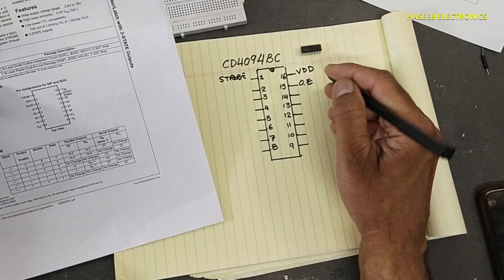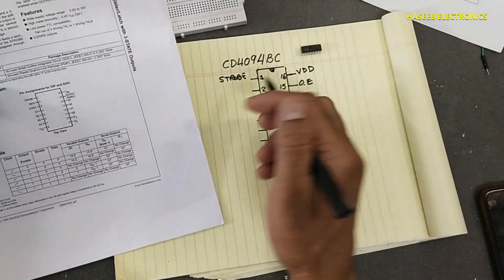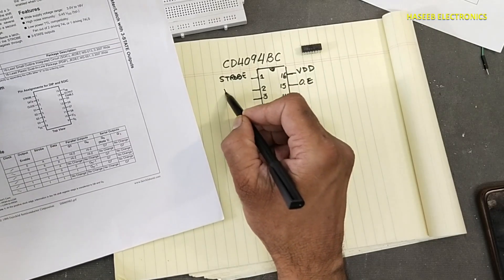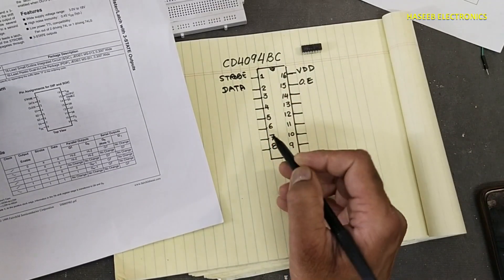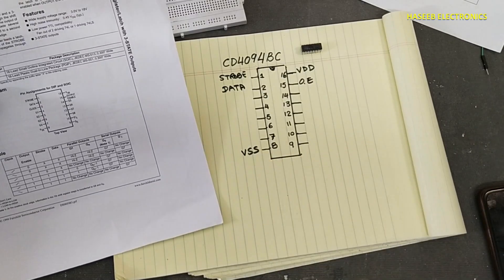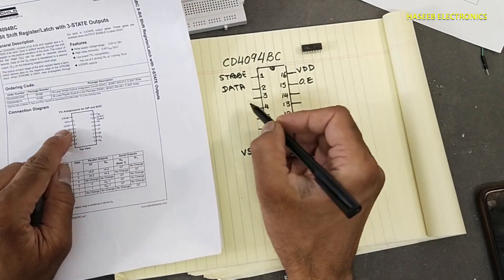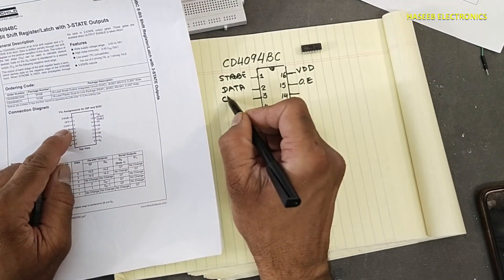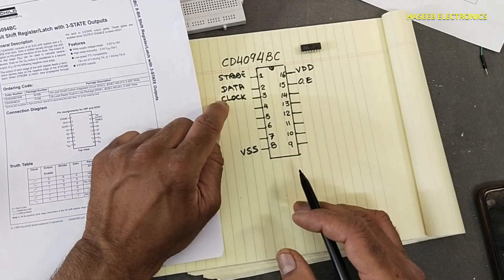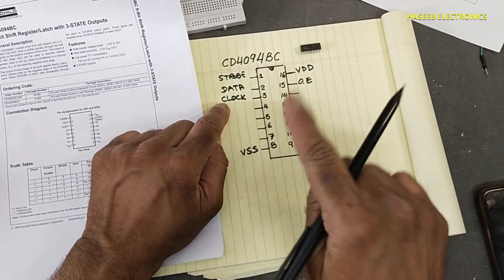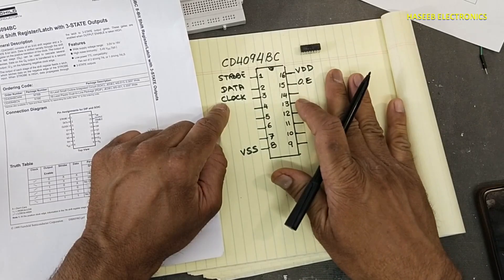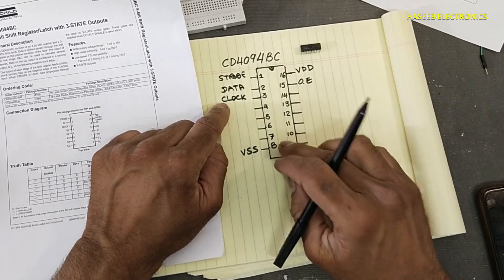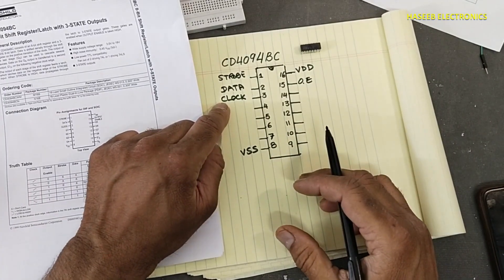Output enable, this is control pin. If we see here, here is data. And here we have VSS, that is ground pin. Pin 3, that is clock pin. If the data is present and clock signal is not changing there will be no action in this IC. So this IC needs a system clock pulse to process the data, to shift the data to the next stage.